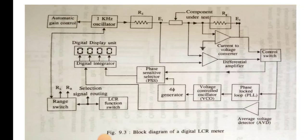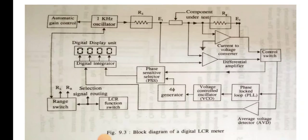The test signal is applied to the source resistor RS, which is located next to the one kilohertz oscillator. The test signal is then applied to the component under test through RS. Once the test signal is applied through RS across the component, signal current begins to flow through the current-to-voltage converter.